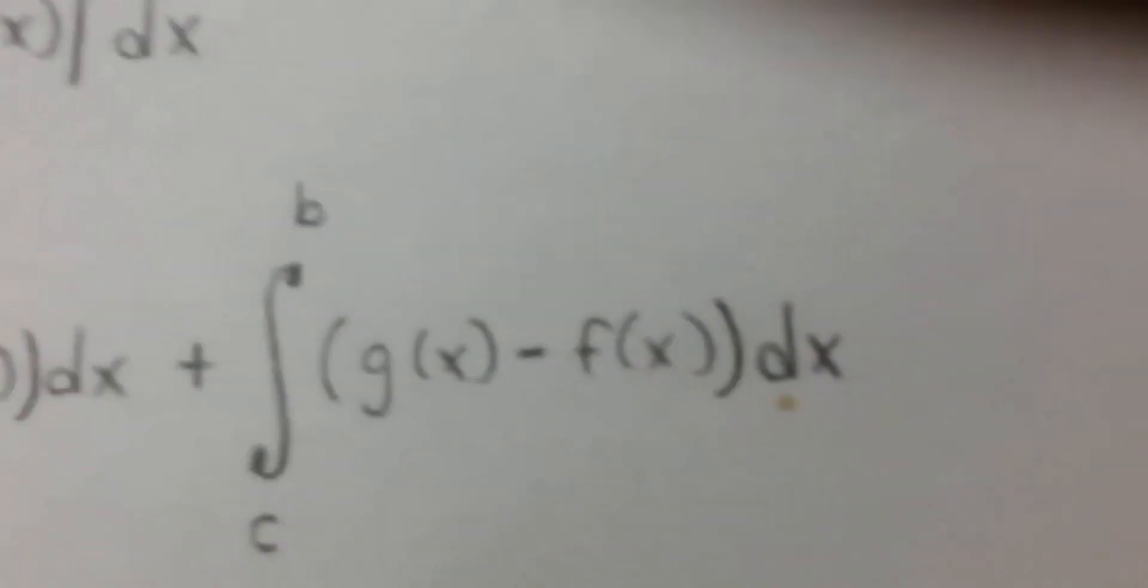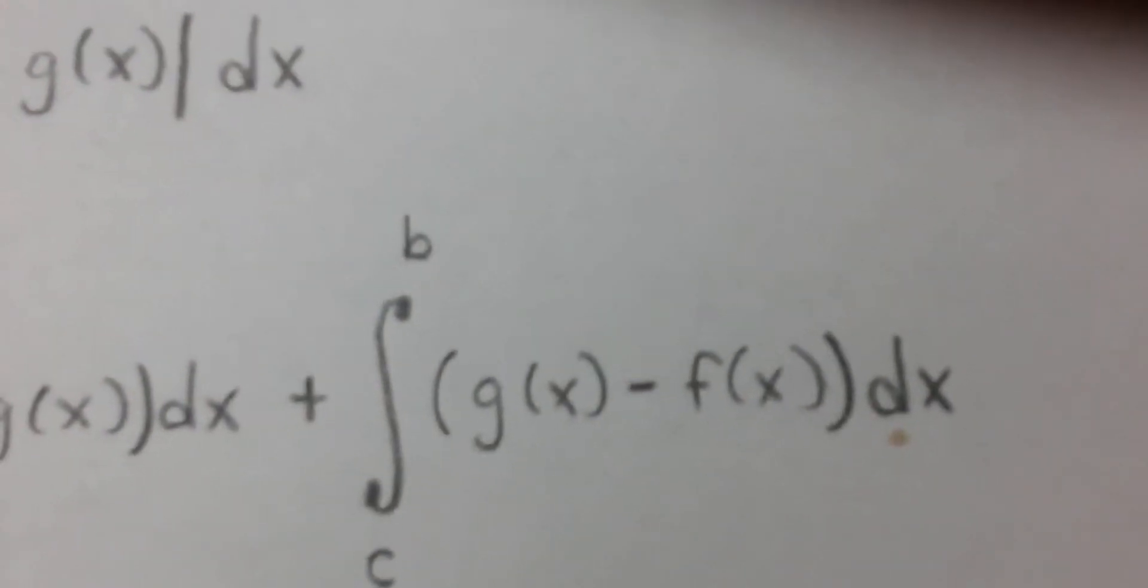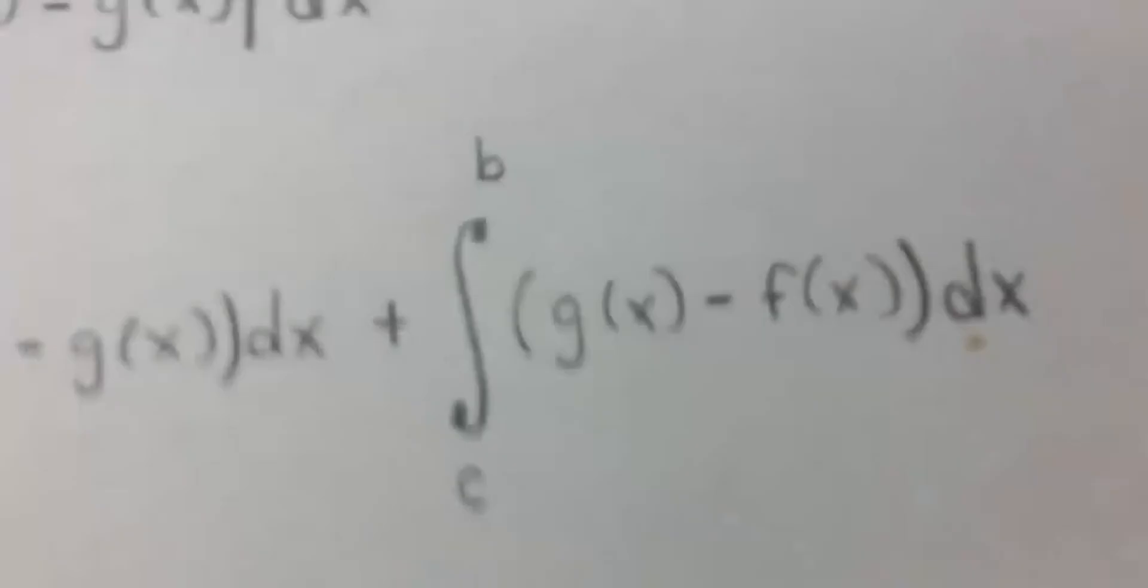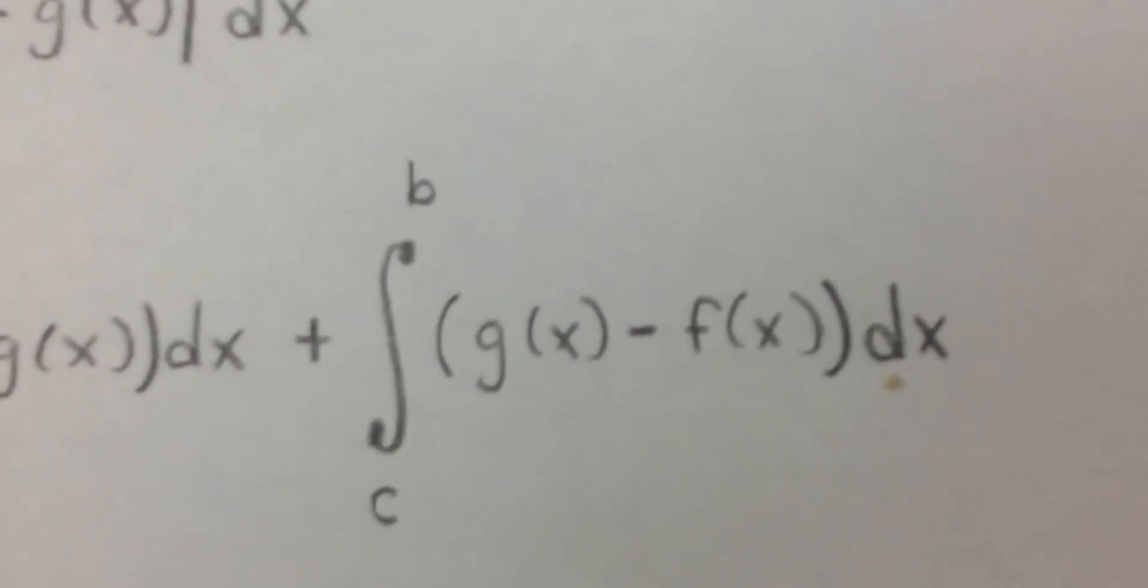Then add in the integral from c to b and reverse the subtraction. Now this time I'm going to do g of x minus f of x.